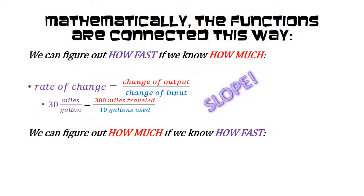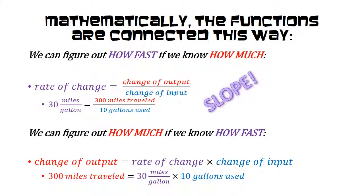We can also go the other way and figure out how much something is changing by knowing how fast it's changing. And we're simply going to take that rate of change equation and rearrange it so that the change in the output can be calculated by the rate of change times how much the input is changing.